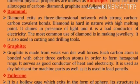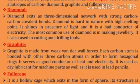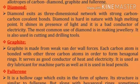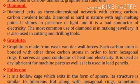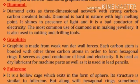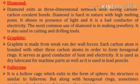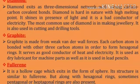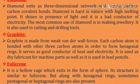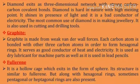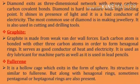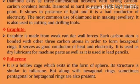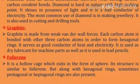Graphite is made from layers of carbon atoms. Each carbon atom is bonded with three other carbon atoms in order to form hexagonal rings. It serves as a good conductor of heat and electricity. It is used as a dry lubricant for machine parts as well as in lead pencils.